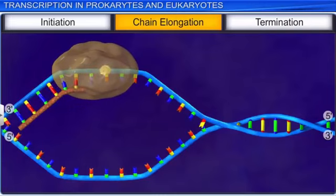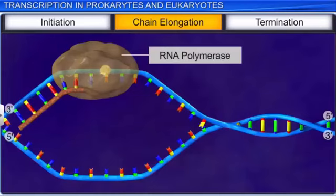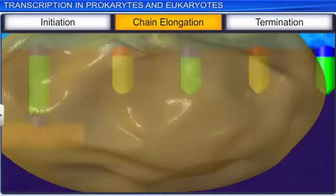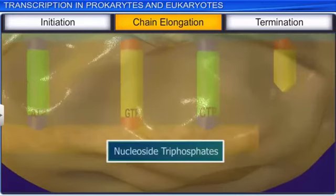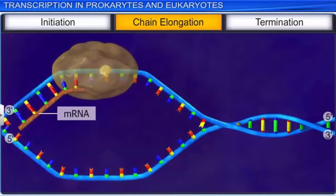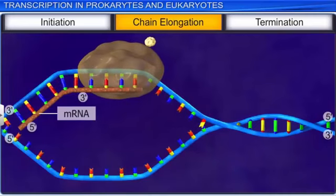In this stage, the RNA polymerase builds a strand of RNA using one of the DNA strands as a template. RNA polymerase uses nucleoside triphosphates as substrates and polymerizes using the law of complementarity. This RNA chain growth takes place in 5' to 3' direction. After chain elongation commences, the sigma factor dissociates from the RNA polymerase and can be reused.